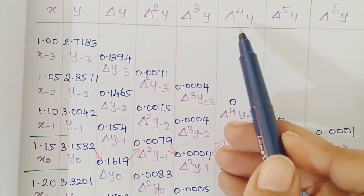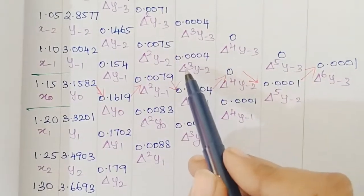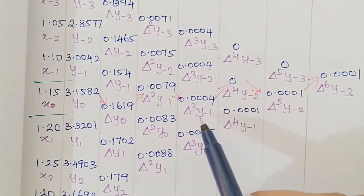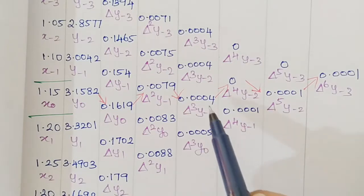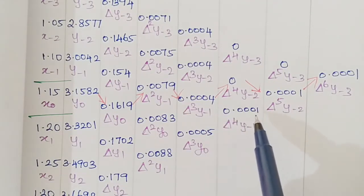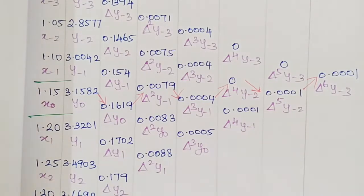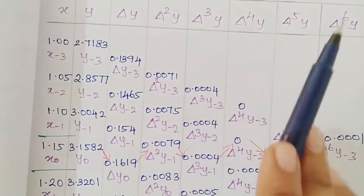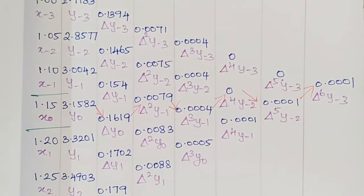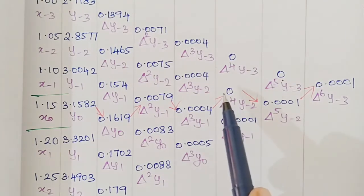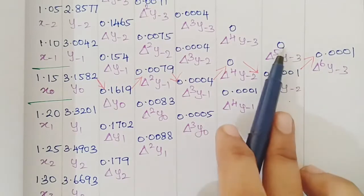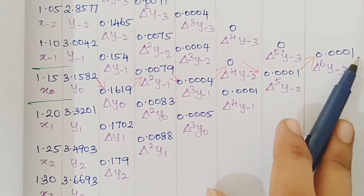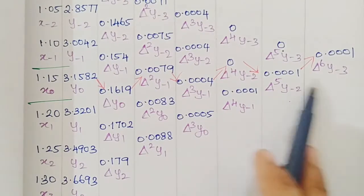Next, computing fourth and fifth differences. δ⁴y₋₁ is computed. For δ⁵y₋₂: the result is 0.0001 minus 0 = 0.0001. δ⁶y₋₃ is the last single term. The difference table is now complete.